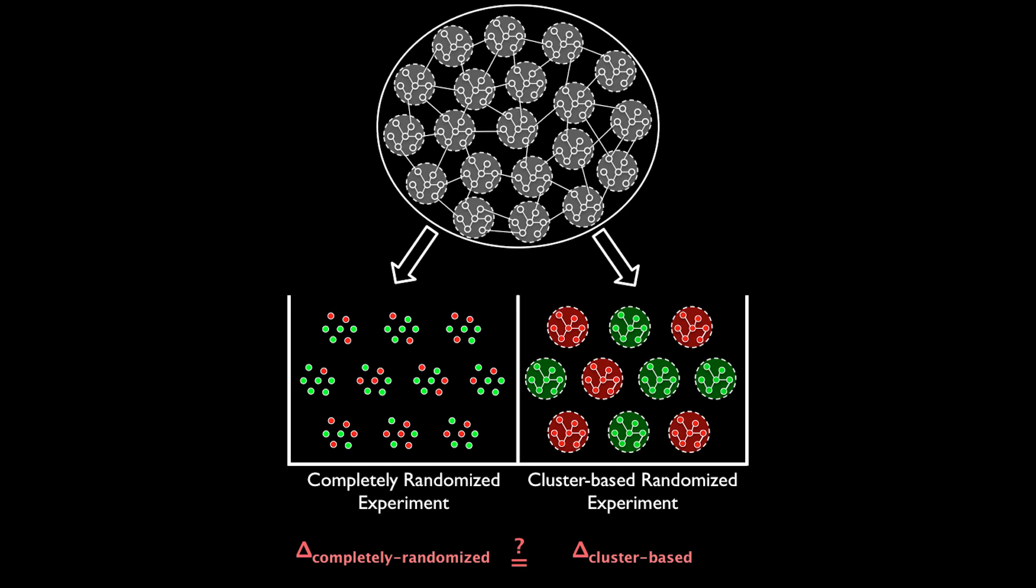We then compare the estimates obtained from the two experiments. If there are no network effects, then we expect the two estimates to be very similar. But if the estimates are significantly different, then that is an indication of the presence of network effects.